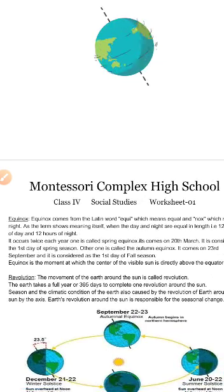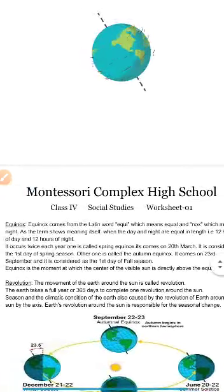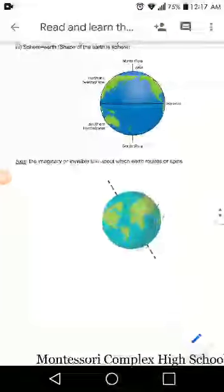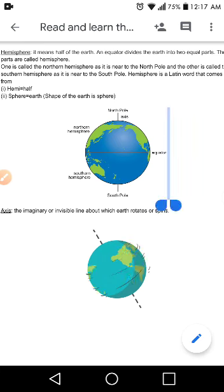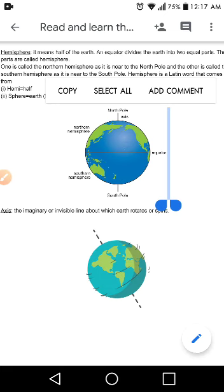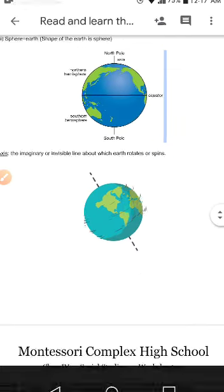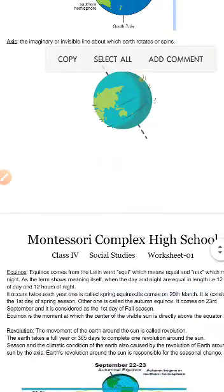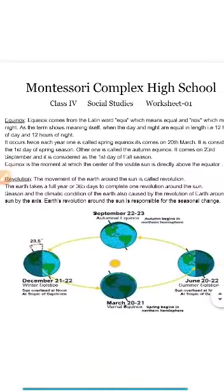Equinox is the moment at which the center of the visible sun is directly above the equator. When the sun is directly above the equator, both sides receive equal light, and as the earth rotates, the moon's light also falls equally, resulting in equal hours of day and night. Now let's talk about revolution.